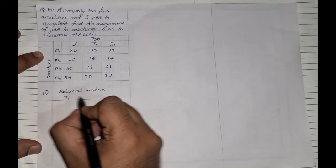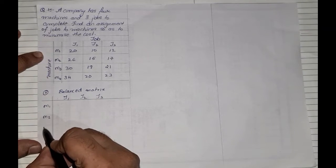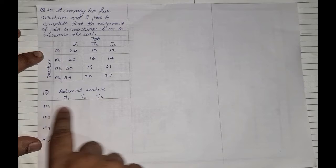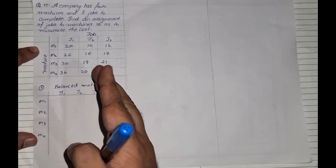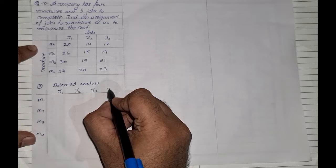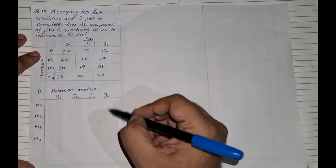In jobs we have J1, J2, and J3, and in machines we have M1, M2, M3, and M4. There are 4 machines but only 3 jobs, so we will have to add one additional job to balance it out. We need to add one dummy column, which will be J4 — the dummy column.